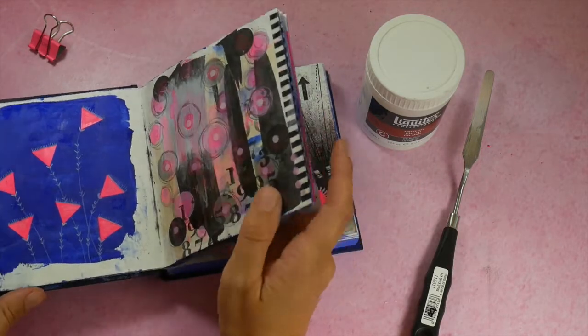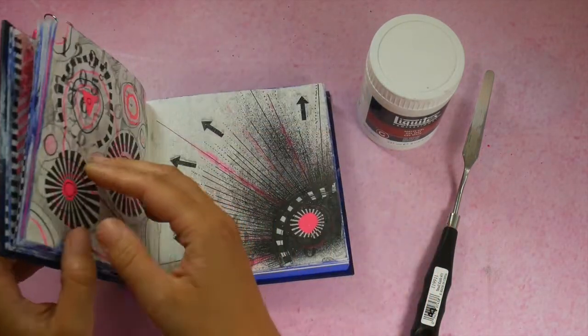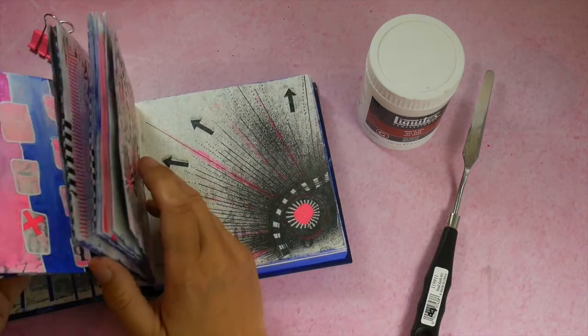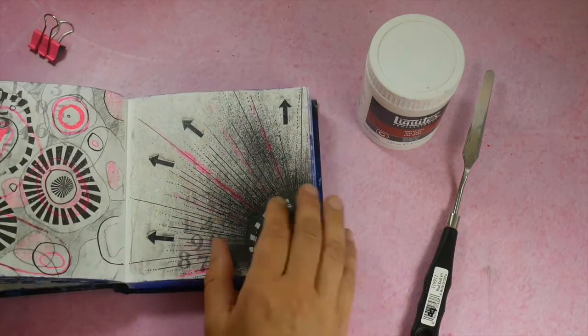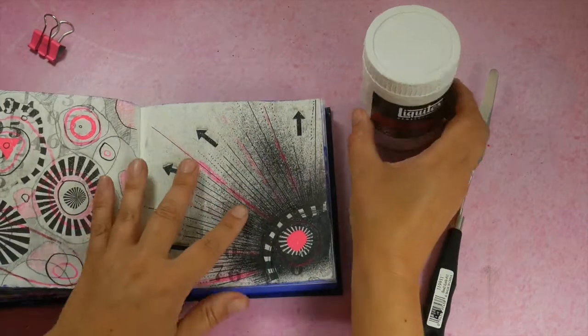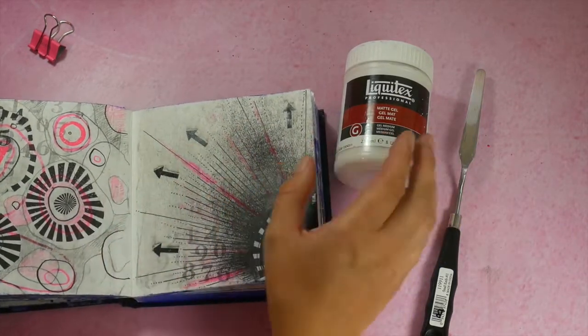When you use a gel medium which is a sort of acrylic paint but then translucent without any pigments in it, they sometimes will make your pages sticky. And yes, it sometimes gets a tiny bit sticky but really not as much as all the other brands.